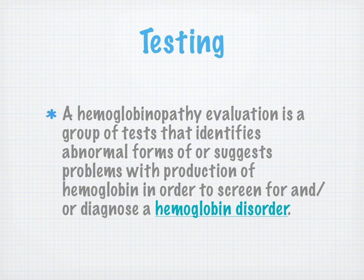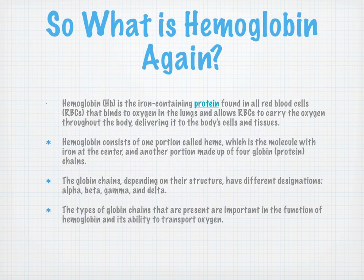So how do we test for these? It's a blood test. A hemoglobinopathy evaluation is just a group of tests that identifies the abnormal forms or suggests problems with production of hemoglobin in order to screen for or diagnose the disorder. Hemoglobin is the iron-containing protein found in all red blood cells that binds oxygen in the lungs, allowing red blood cells to carry oxygen throughout the body and deliver it to cells and tissues.